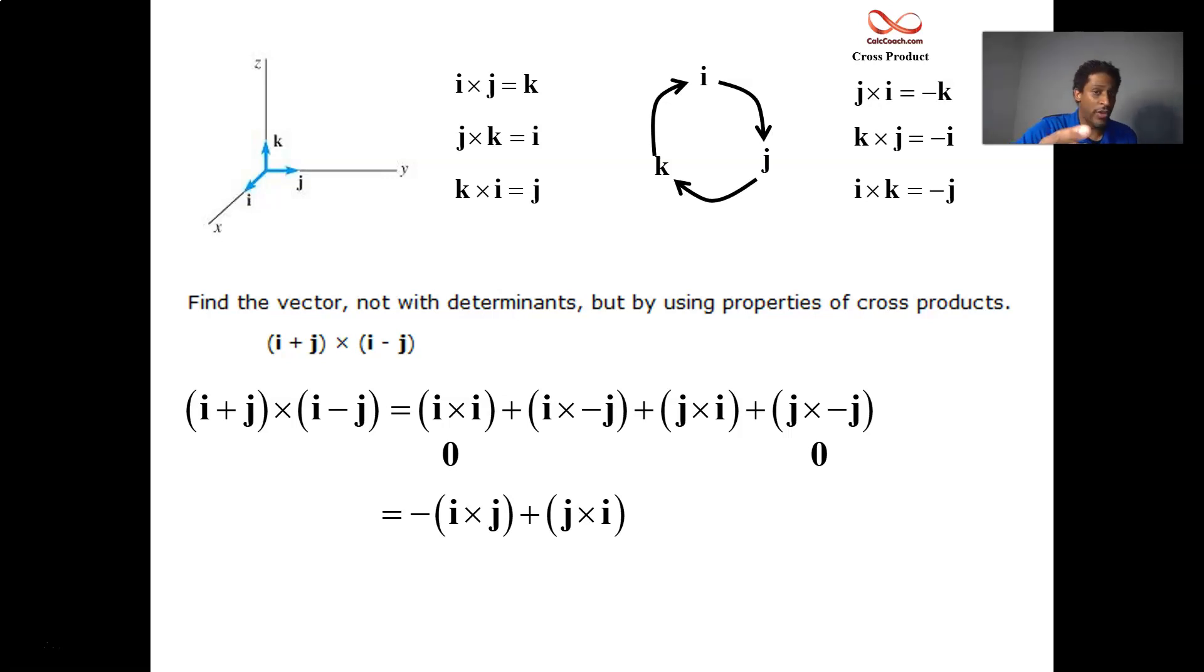And then using the wheel, we can figure out i cross j is k, while j cross i is going against the wheel. That's going to be a negative k. Therefore, the final answer, negative 2k. When you cross i plus j with i minus j, you get negative 2k.